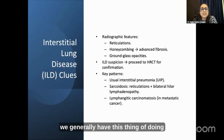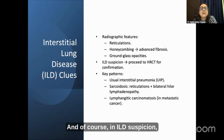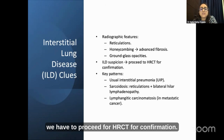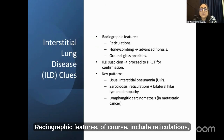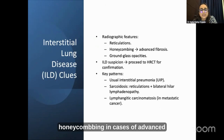When we talk about ILDs, we generally just do a CT scan, and in ILD suspicion we have to proceed for HRCT for confirmation. But there are chest X-ray cues as well. Radiographic features include reticulations, honeycombing in cases of advanced fibrosis, ground glass opacities in NSIP.